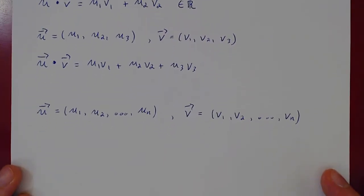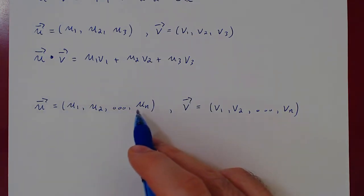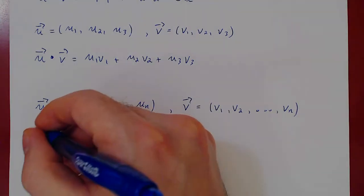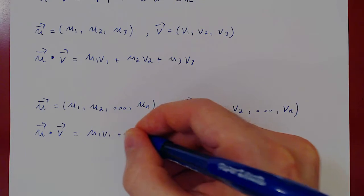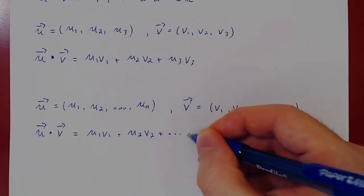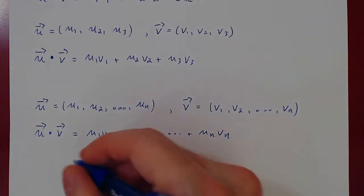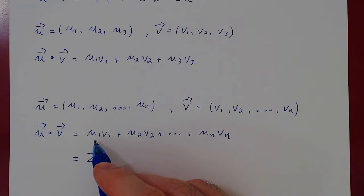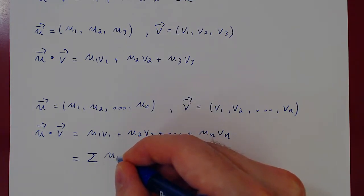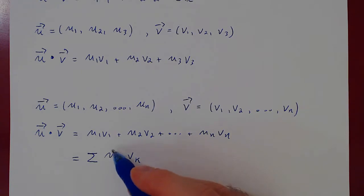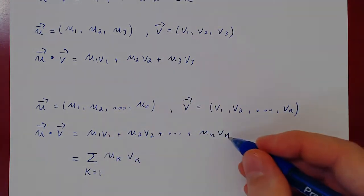And of course, if we go to Rn, if you have a vector with n components u1, u2, u3 up to un, and v1, v2, v3 up to vn, the dot product is the same: we simply multiply corresponding entries and add them up. So u1 times v1, plus u2 times v2, plus dot dot dot, up to un times vn. We can write this more concisely using sigma notation: it is the sum of u_k times v_k, where k goes from 1 to n — the kth component of u times the kth component of v.